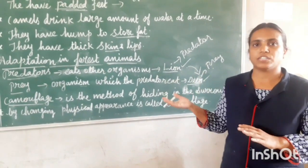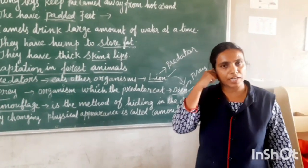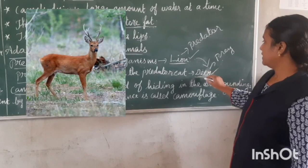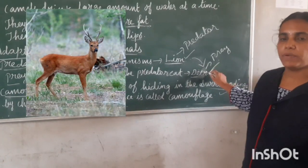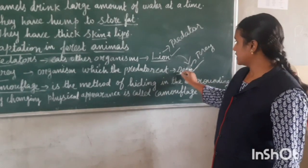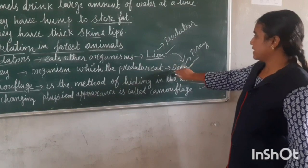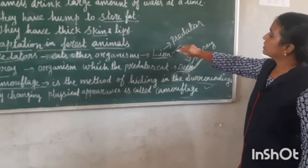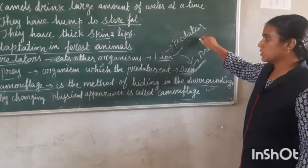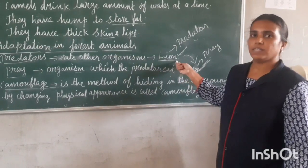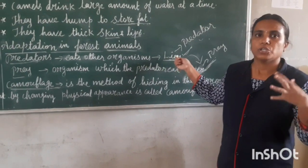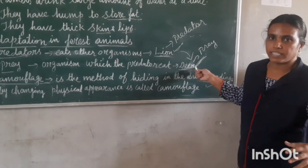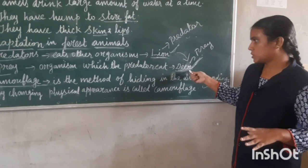Many animals depend on other animals for food. Carnivores are animals that eat other animals. Herbivores are animals that eat only plants — for example, deer. Carnivores have sharp canine teeth, while herbivores have wide, flat grinding teeth to chew food properly.